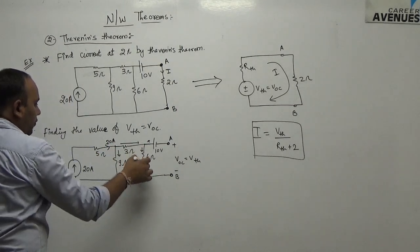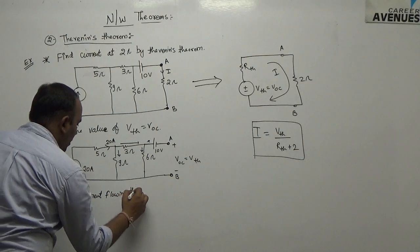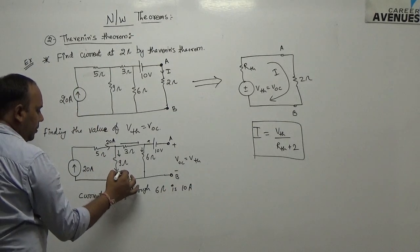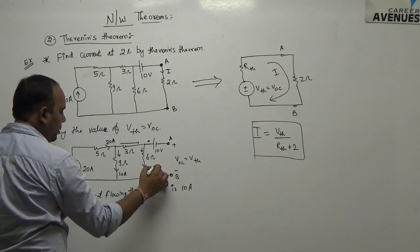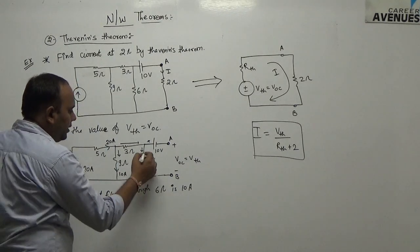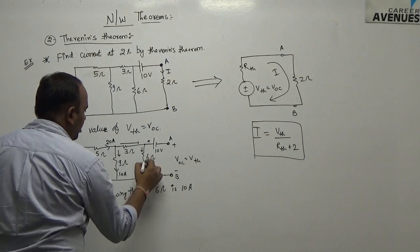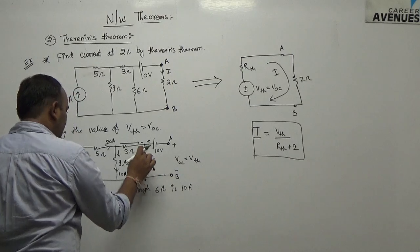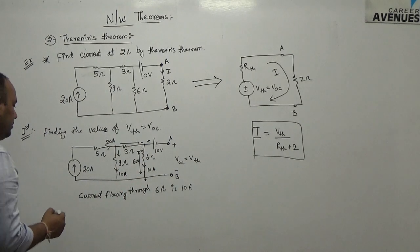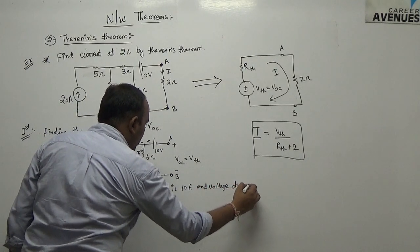The current flowing through the 6 ohm is 10 ampere. The current in this branch will be 10 ampere, and also this branch will be 10 ampere. The voltage drop across this point will be 6 into 10, so voltage about this point will be 60 volts. The voltage drop equals 60 volts.